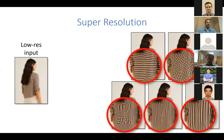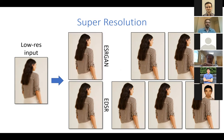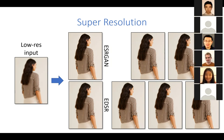However, existing super-resolution methods like EDSR are able to produce higher-resolution outputs, but they only output a single solution — a single high-resolution image. Even images trained using the GAN framework, like EDSR-GAN, are able to produce a more photorealistic, better-looking image, but it is still only one solution.